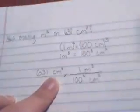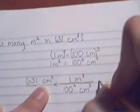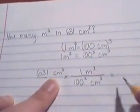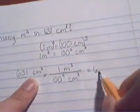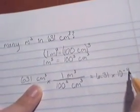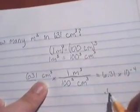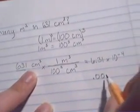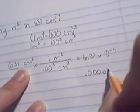Remember that one cubed is just one. So the answer you get from doing this calculation is 6.31 times 10 to the negative 4. Don't forget if you write this down this is actually 0.000631.